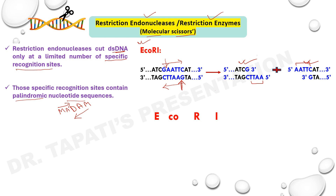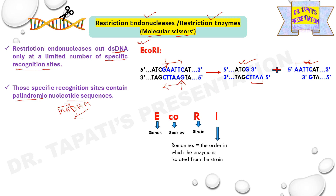Regarding the name EcoRI: 'E' stands for Escherichia, which is the genus; 'co' stands for coli, which is the species — so this enzyme is obtained from E. coli. 'R' denotes the strain, and 'I' is the Roman numeral indicating the order in which the enzyme was isolated from that strain.